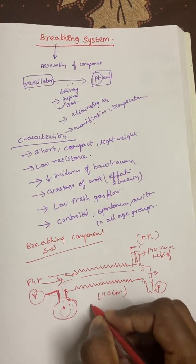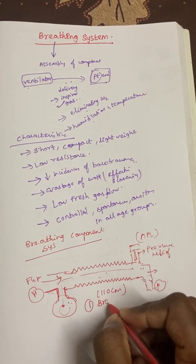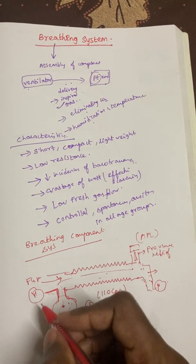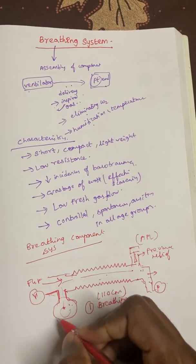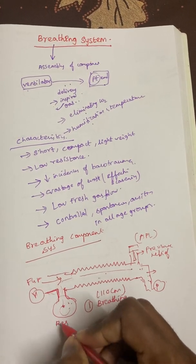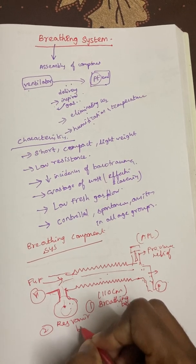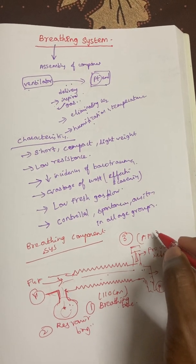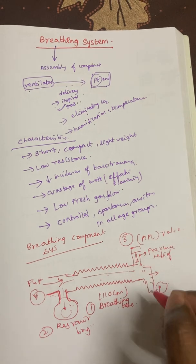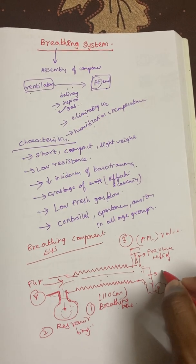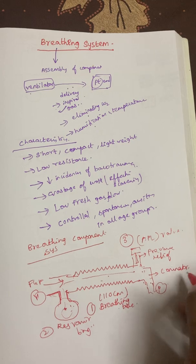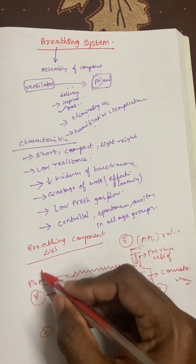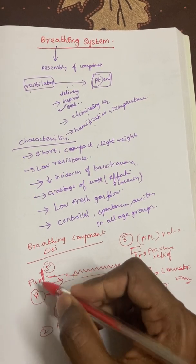There are 5 components of an ideal breathing circuit. Number 1: breathing tube, also called corrugated breathing tube. Number 2: reservoir bag. Number 3: adjustable pressure relief valve, or APL valve. Number 4: connector. Number 5: fresh gas flow, which comes continuously from the anesthesia machine.